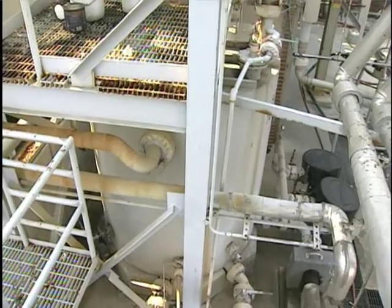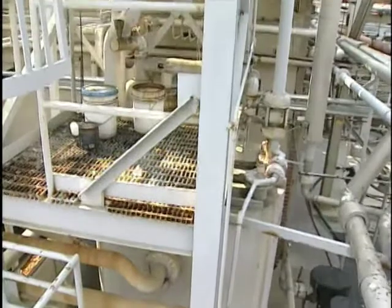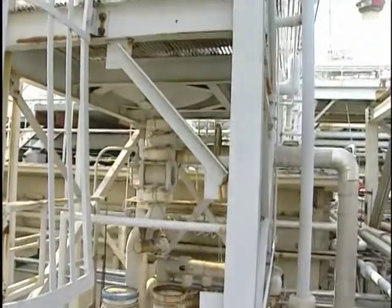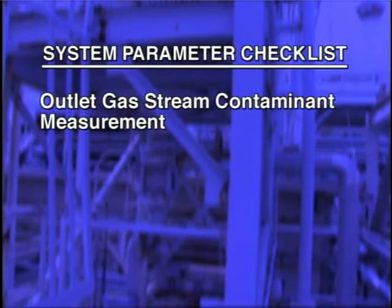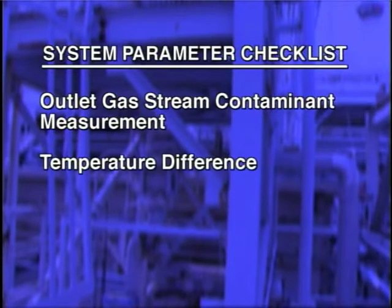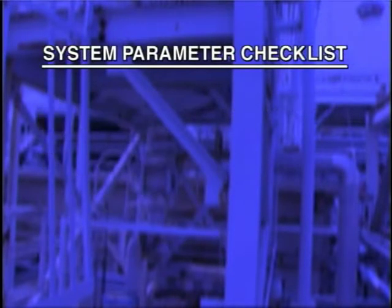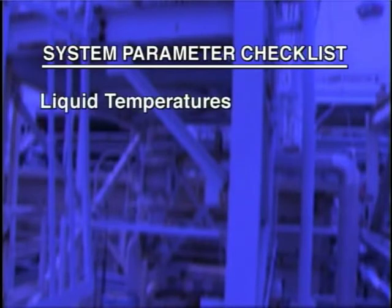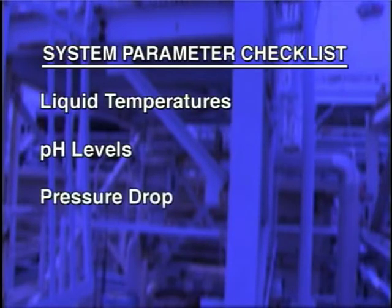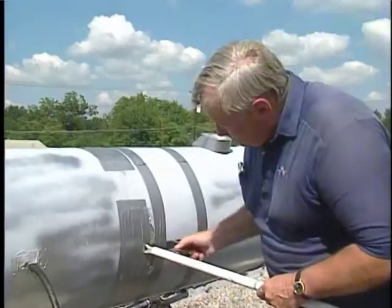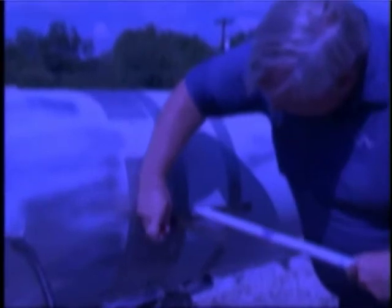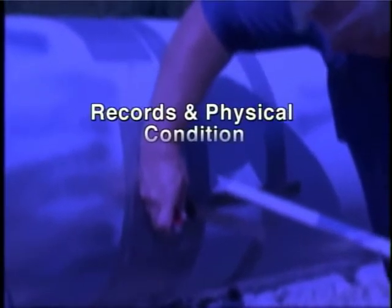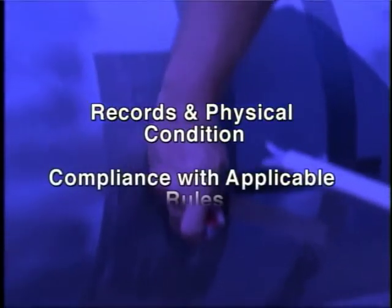To review, to determine if an absorption system is working properly, field personnel should observe, if possible: the outlet gas stream contaminant measurement (though not likely available), the temperature difference between the gas inlet and outlet, the liquid flow rate and liquid pressures. Other parameters include liquid temperatures, pH levels, pressure drop, and stack opacity. As with any inspection of an air pollution control device, attention must be given to the system's records, physical condition, and compliance with the applicable rules.